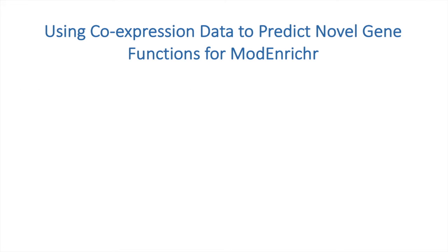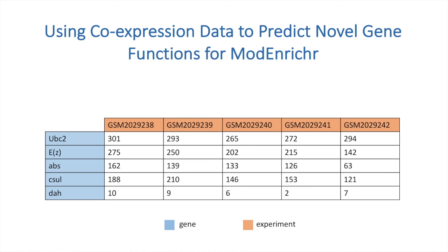Existing gene set libraries can then be used to predict new annotations and associations for genes. I used gene coexpression data to predict novel GO term annotations for fish and fly genes. First, GEO and SRA experiments using HiSeq 2000, HiSeq 2500, and NextSeq 500 platforms for a species are processed in a uniform way to generate a matrix of gene counts for each experiment.